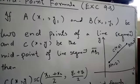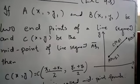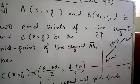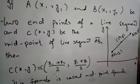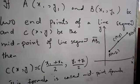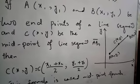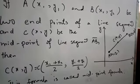If A(x1, y1) and B(x2, y2) be two endpoints of a line segment, you can see on the diagram here we have a line segment AB where endpoints are A(x1, y1) and B(x2, y2). And C(x, y) be the midpoint of the line segment AB.